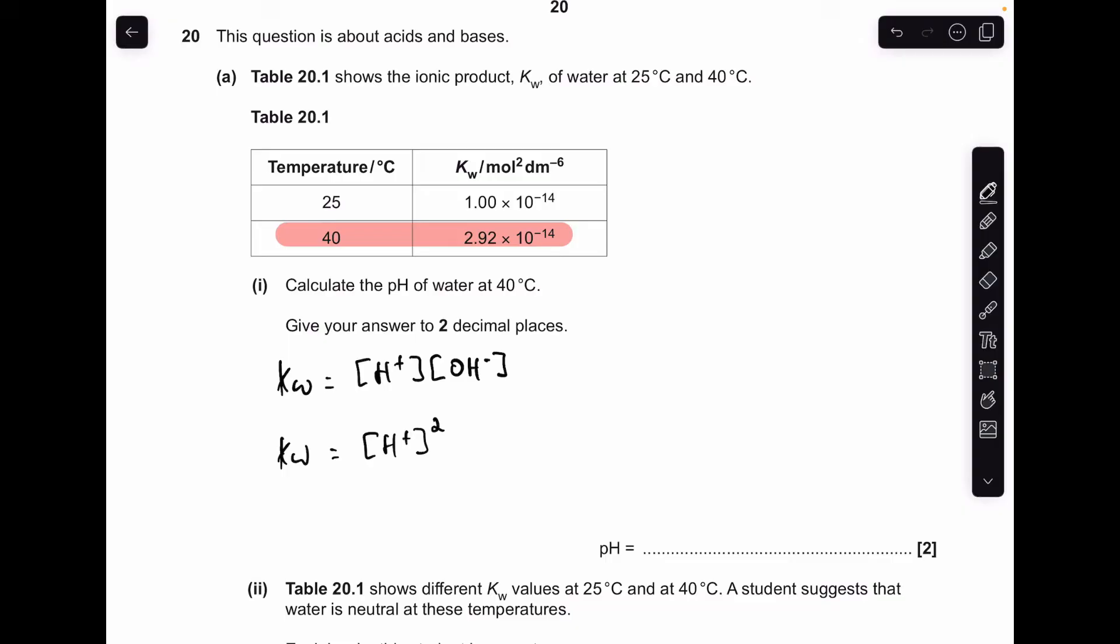For any pH calculation, we've got to calculate the H plus concentration, which is going to equal the square root of KW. Put that value in for KW, find the square root, which comes out at 1.709 times 10 to the minus 7 moles per decimeter cubed. All we've got to do now is minus log that number, which to two decimal places comes out at 6.77 for the pH.